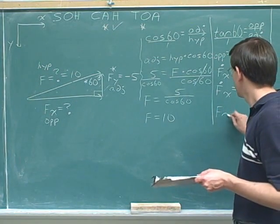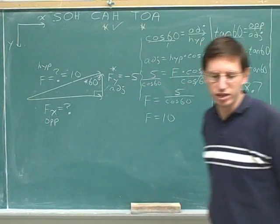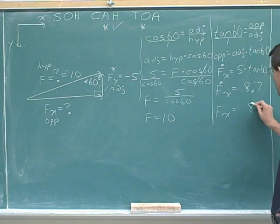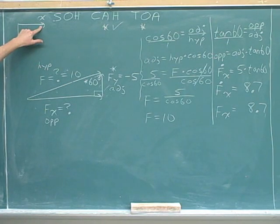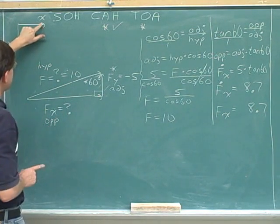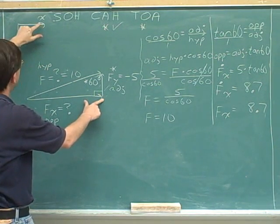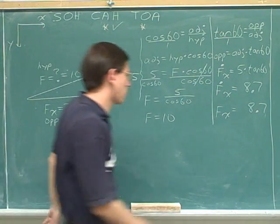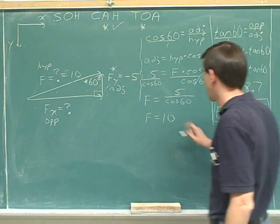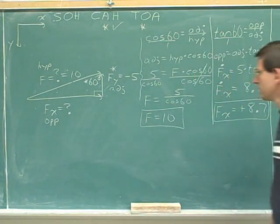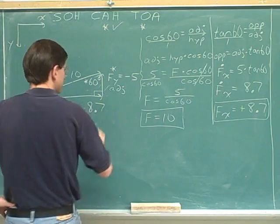But I'm not done until I figure out the signed component. The question was asking for the signed component without the dot. Let's see. Well, the x component was pointing to the right. And I should say the positive x direction is to the right. And here we have that the x component is to the right. Positive is to the right. The x component is to the right. So our x component is positive. The x component is positive 8.7.